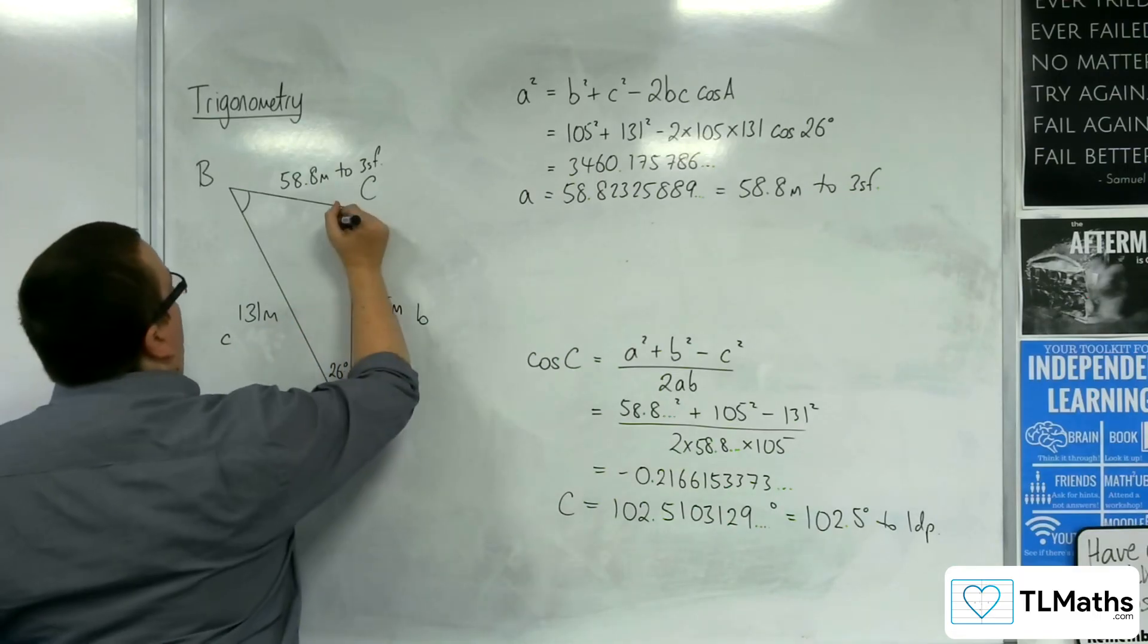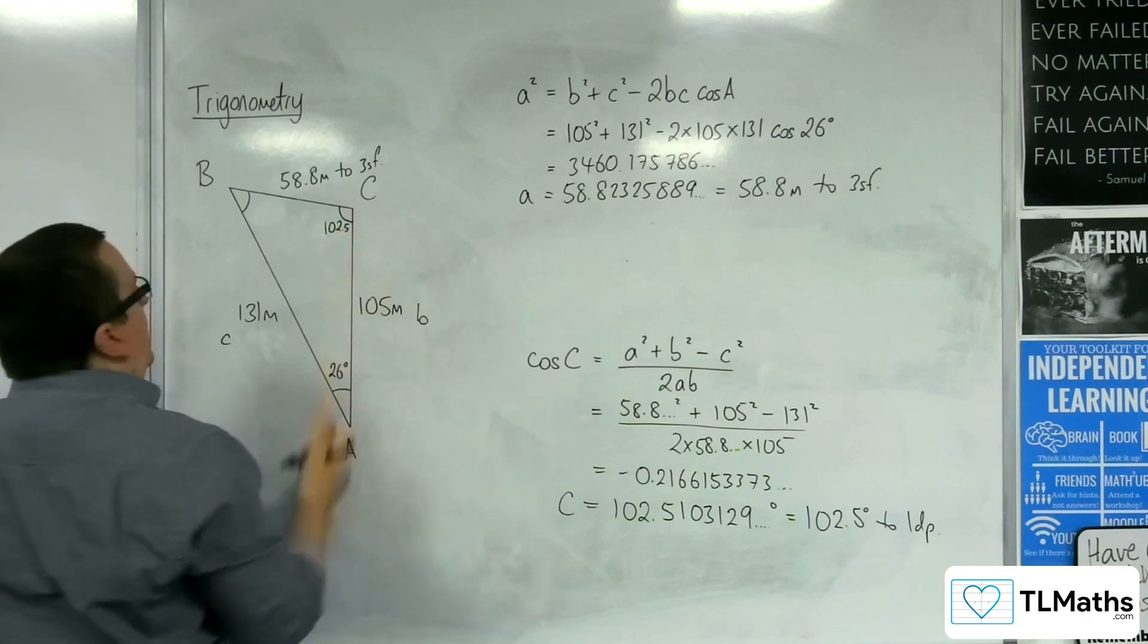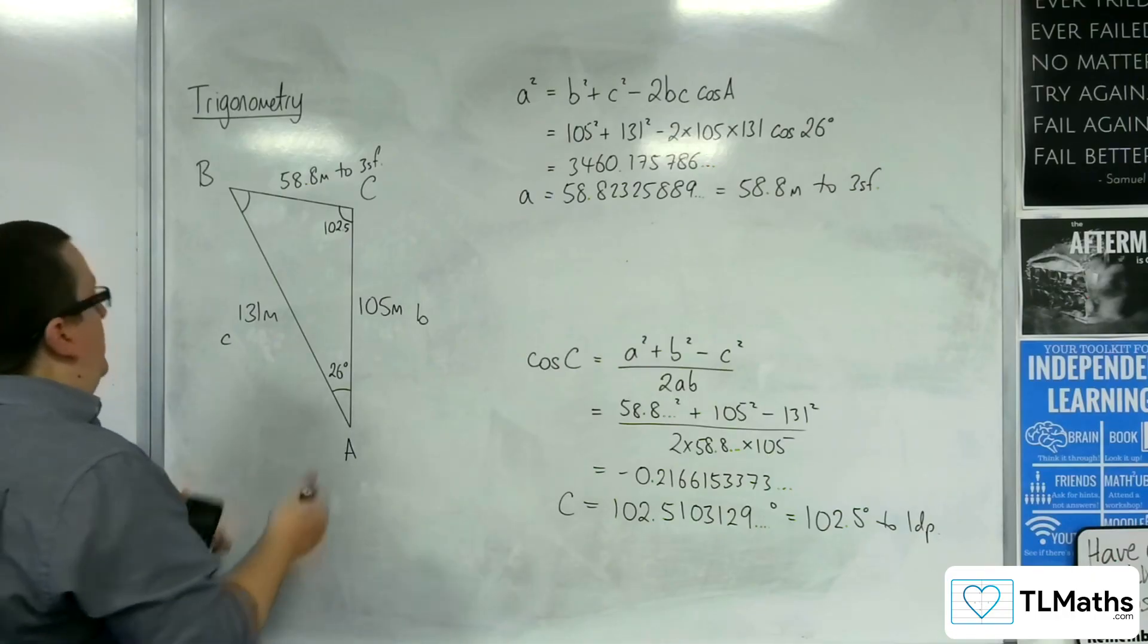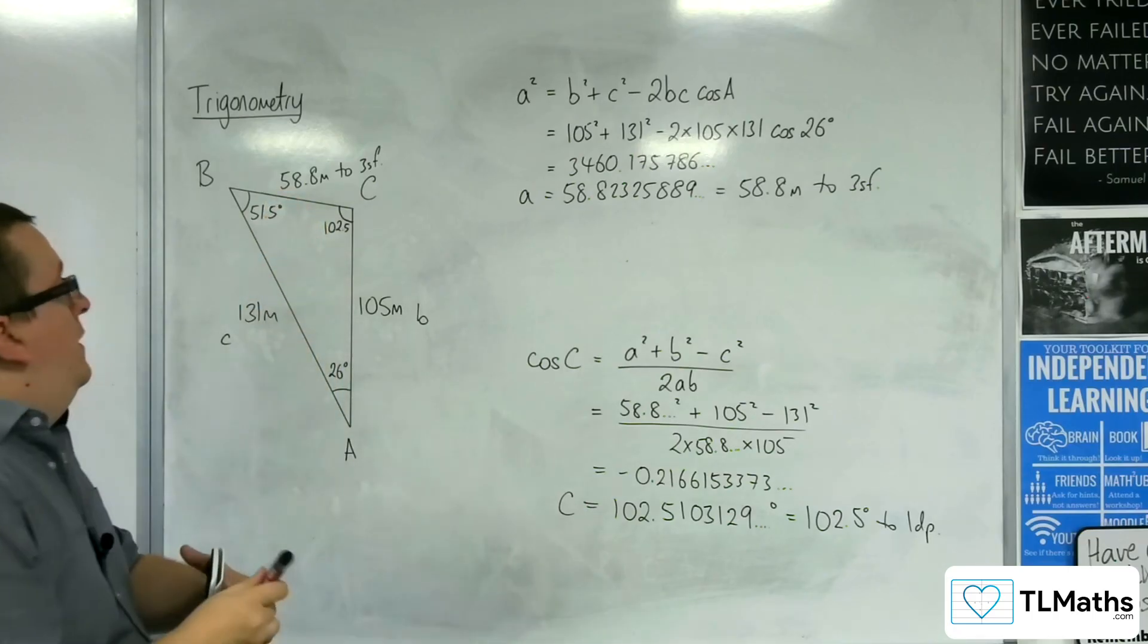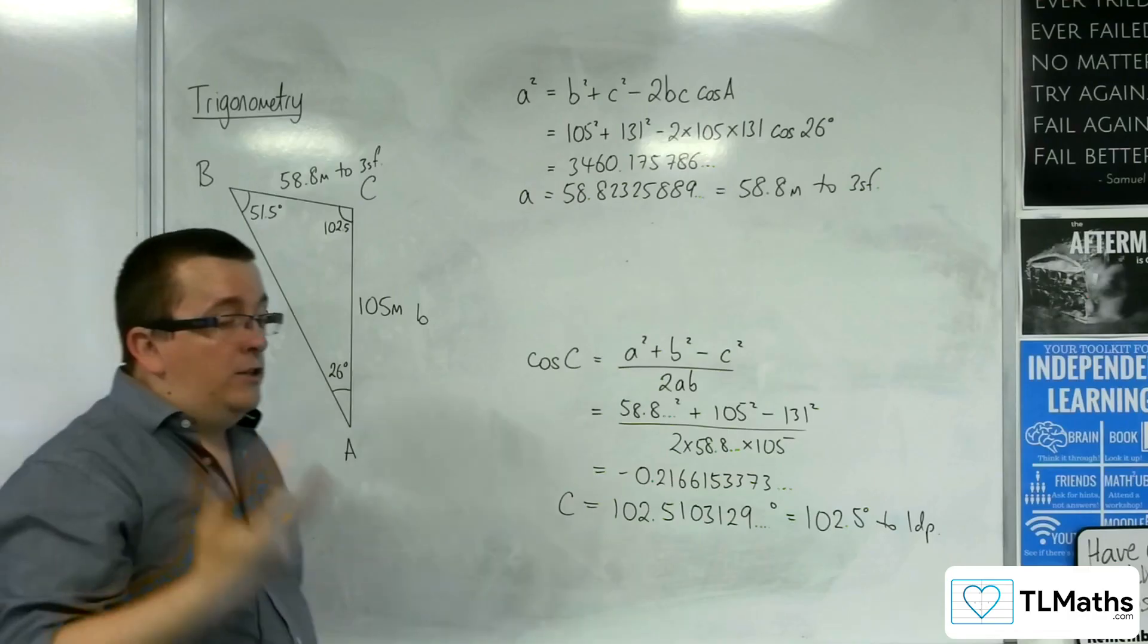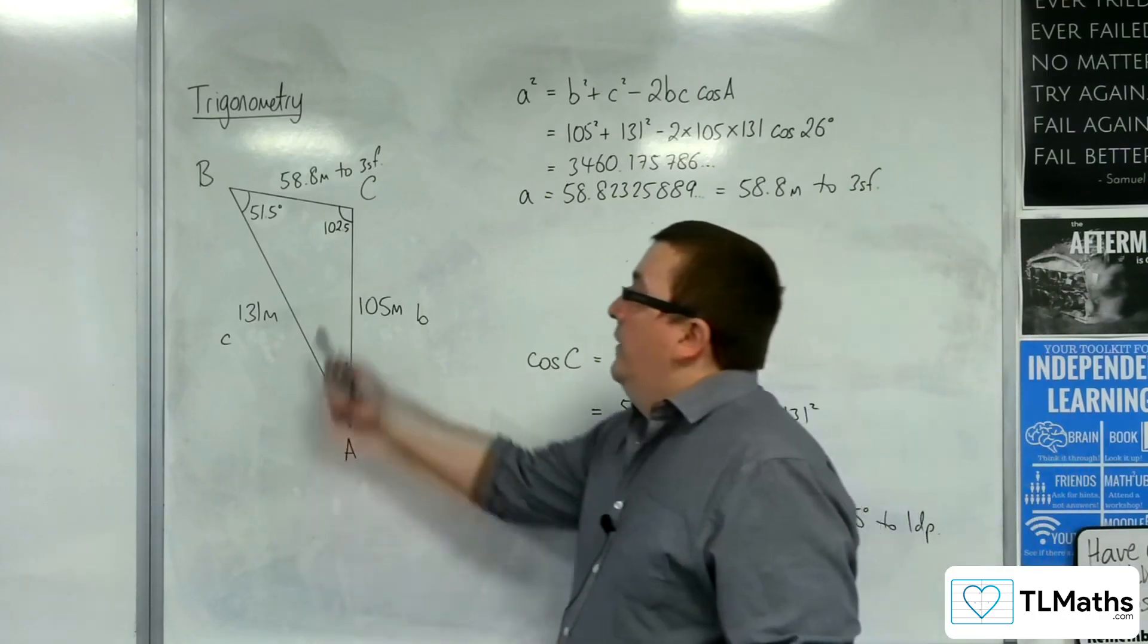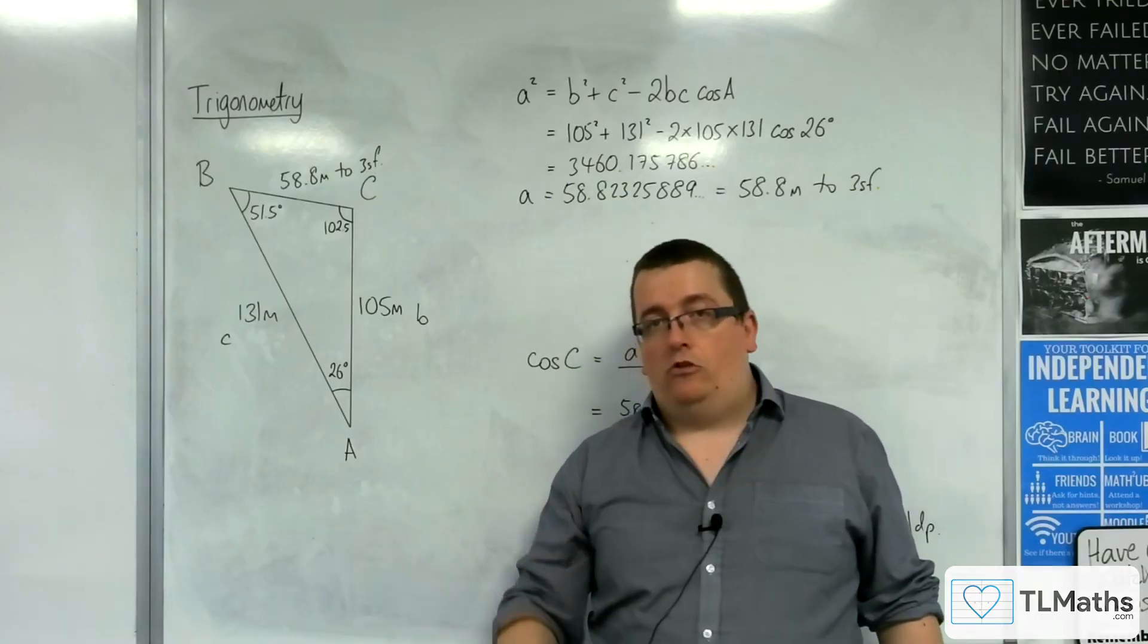We've got the 102.5. And so, I can just do 180, take away that angle, take away the 26, and it gives me 51.5 for this angle. So, you should find that if you've used the sine rule or the cosine rule to work at angle B first, you should get the 51.5. It's just that if you'd done the sine rule to work out angle C first, then you would have made an error.